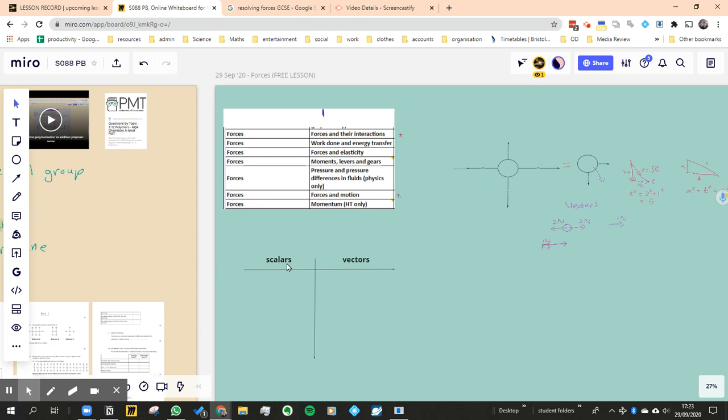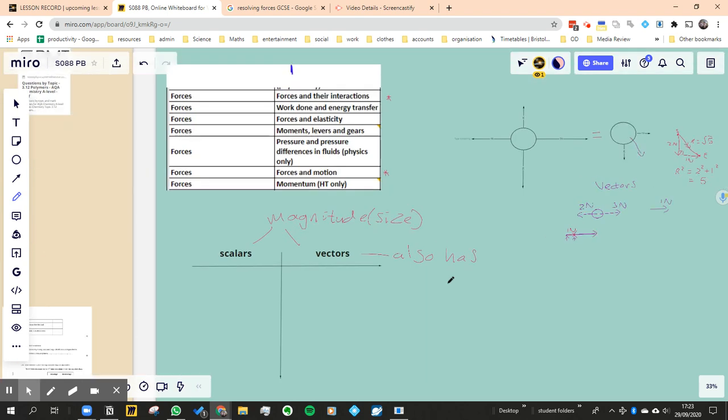But some of these measurements also have size. A scalar, both of these have a size or we can say magnitude. But this also has direction. I'm going to zoom in.